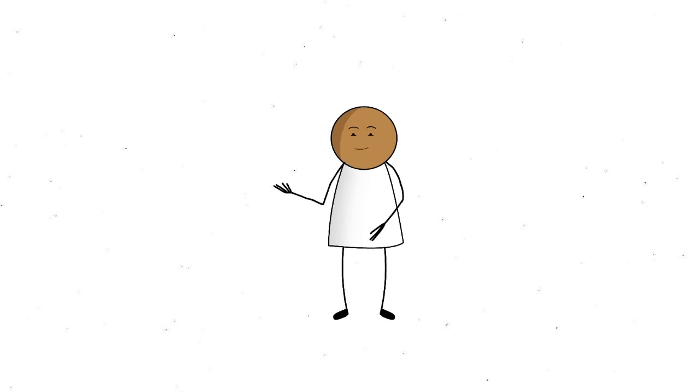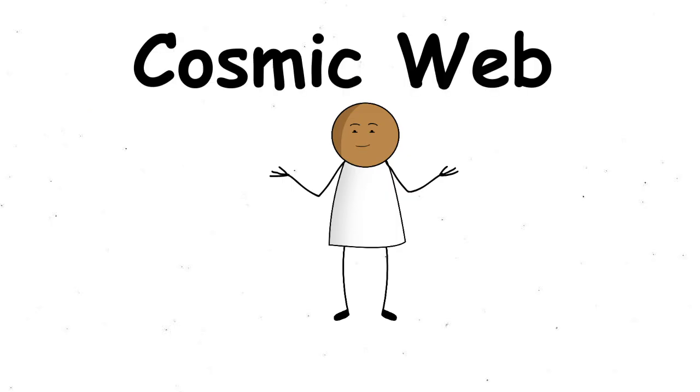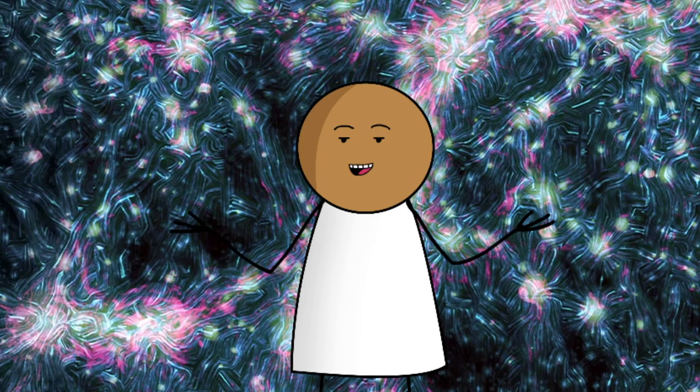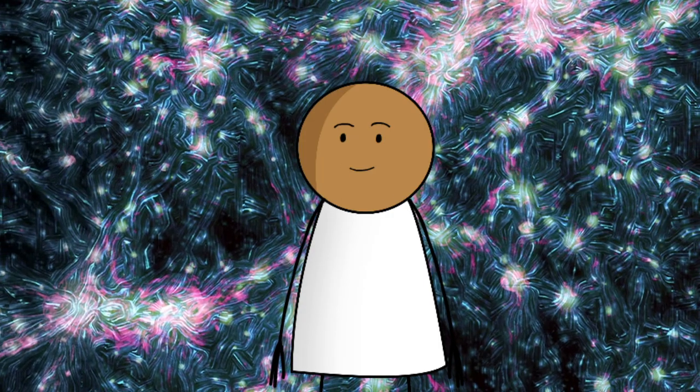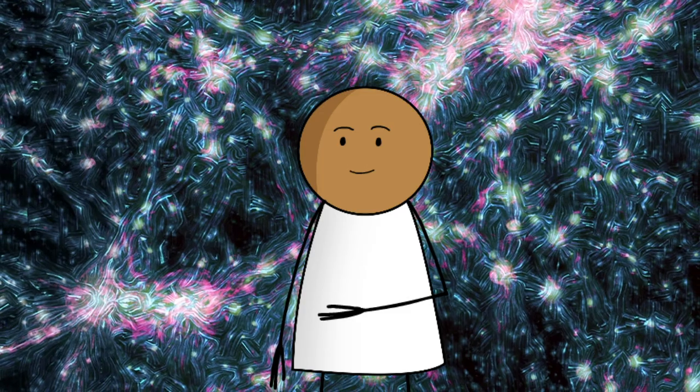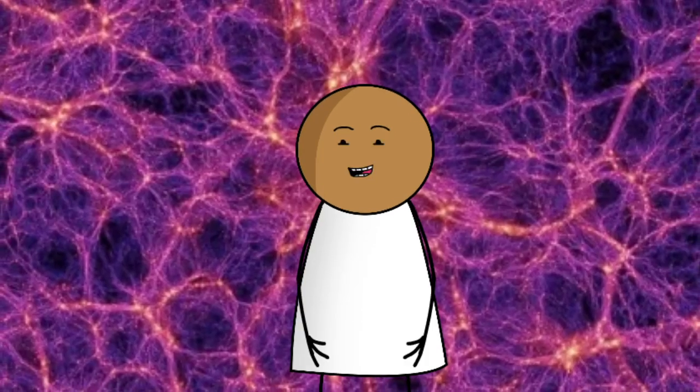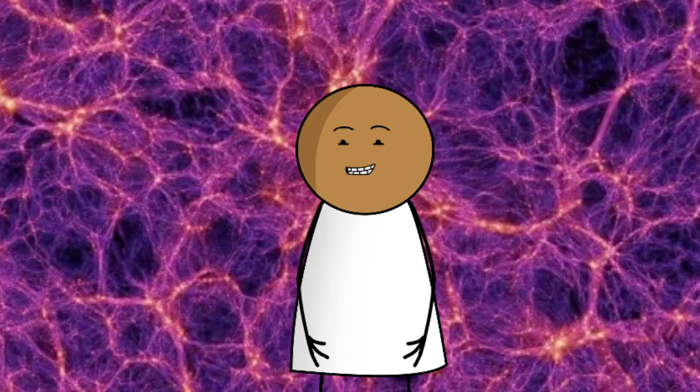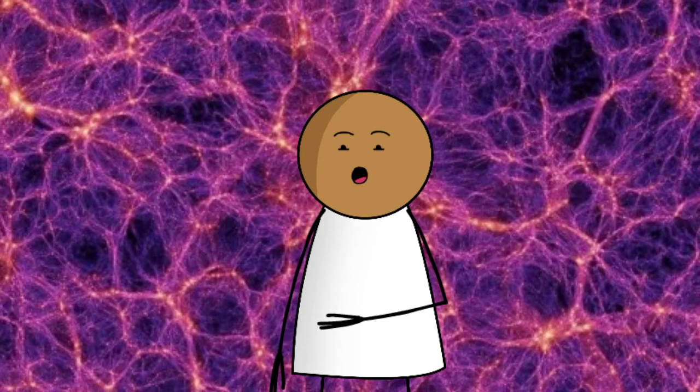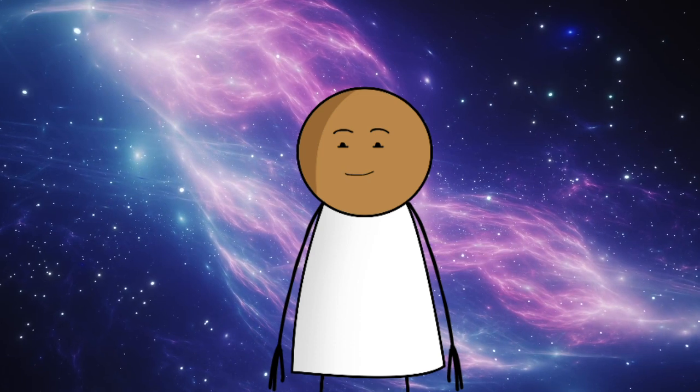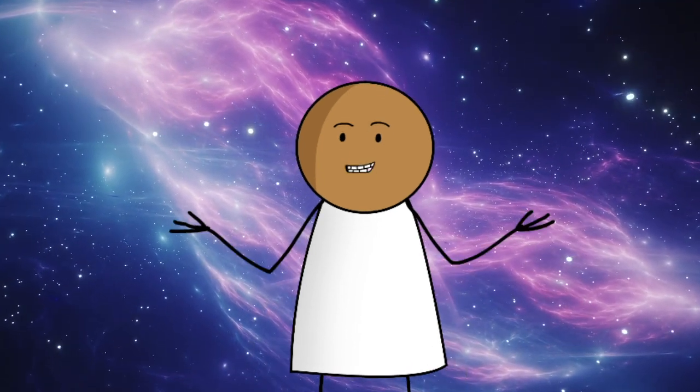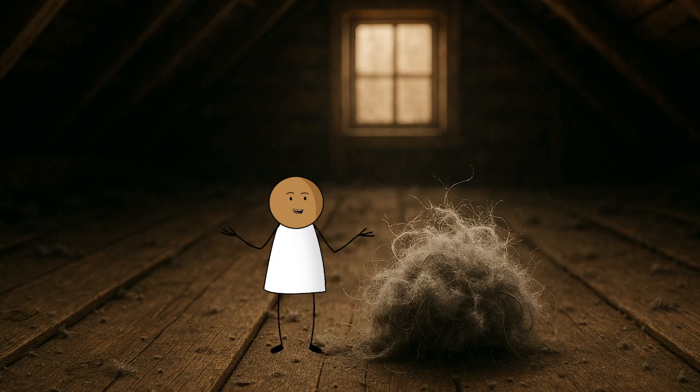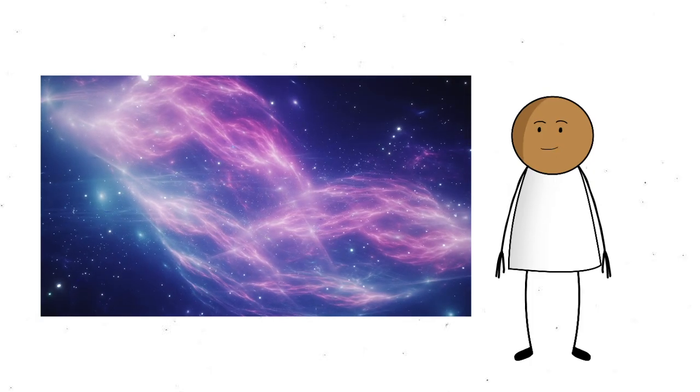But zooming out from molten chaos, there's something even more massive waiting in the background. A structure so vast and complex it makes entire galaxies look like specks of dust. We're talking about the cosmic web. You might picture space as a bunch of stars scattered randomly like cosmic sprinkles. But zoom out far enough, and the universe starts to reveal something eerily structured. It's called the cosmic web, and yes, it's exactly what it sounds like. A massive network of filaments, made up of dark matter, galaxies, and gas, stretching across billions of light-years.